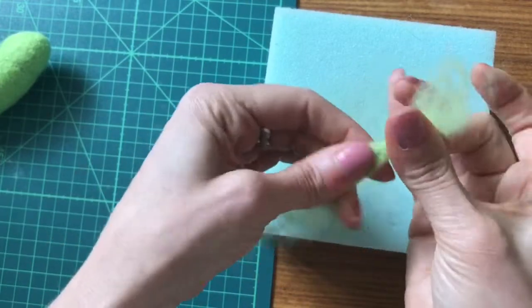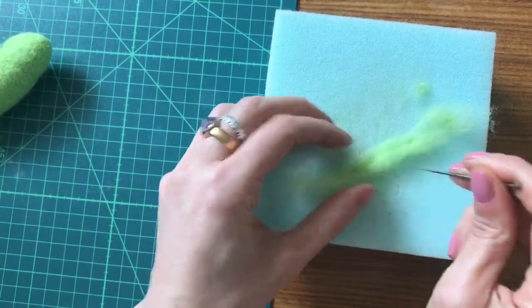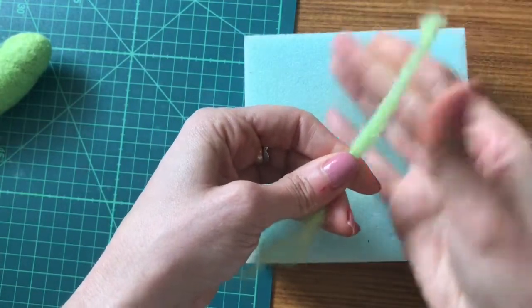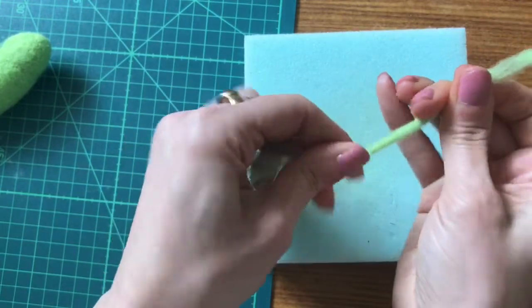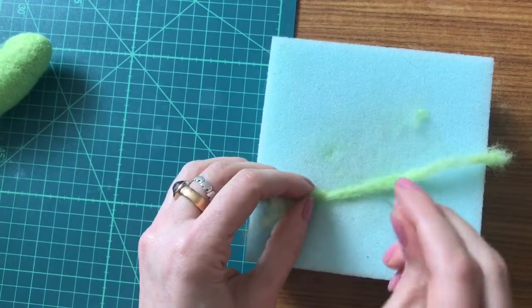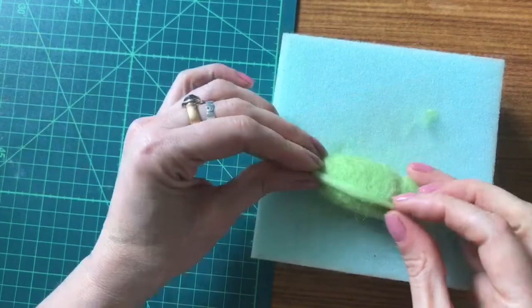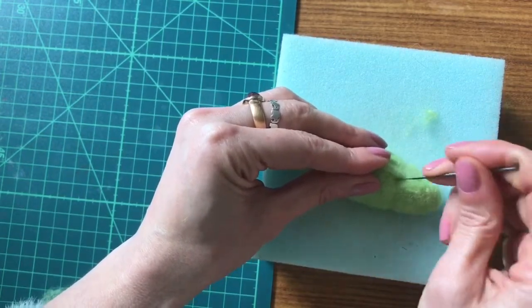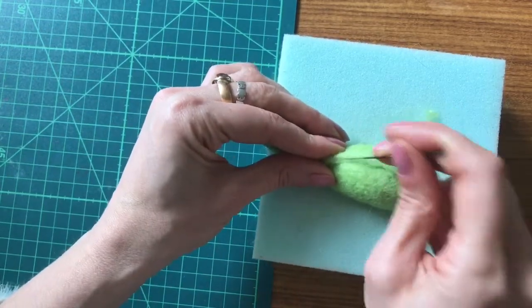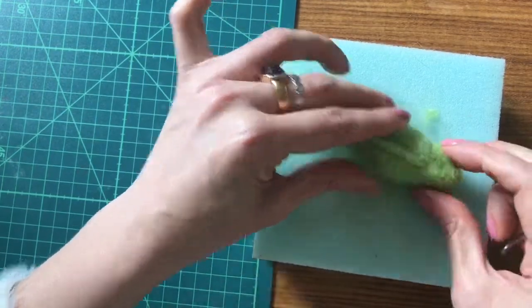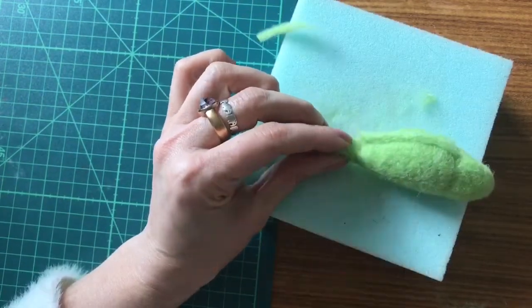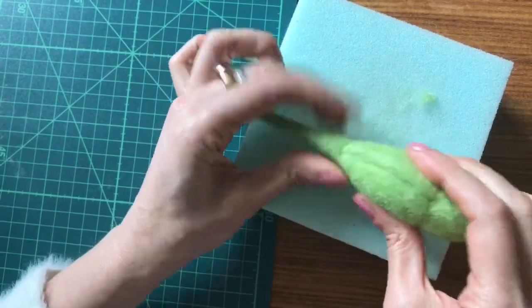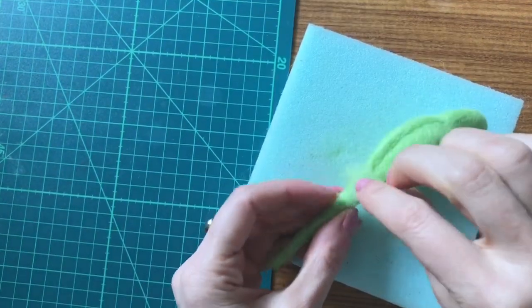Let's make the spine now for our chameleon's back. For that we're just going to needle felt some of the green carded wool, the same color. Roll it in between your fingers and just keep repeating that process until you get a kind of thin dreadlock. Then just line that up along the center of your chameleon's back in line with the top of the head and needle felt into place. Cut to length and needle felt into the top of the tail. A little bit more wool just over the base of the join there.